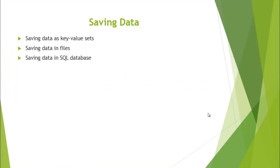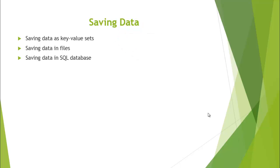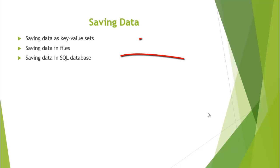In an Android app, you can save data in three ways. First is using key-value pairs — using Android SharedPreferences, we can save data in a key-value format. Another way is using files, where the file can be an internal file or an external file. And the third way is saving data in an SQL database.